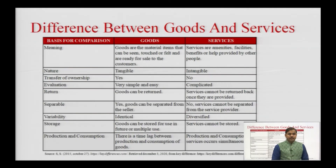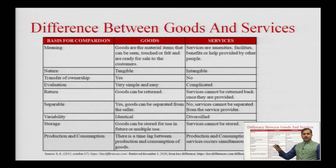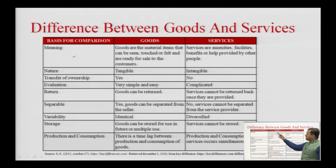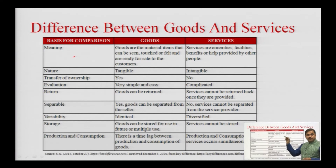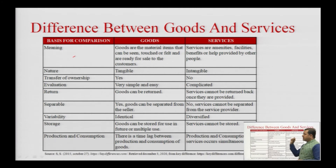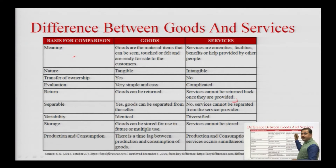Now let us discuss the difference between a product and services. On the basis of meaning, goods are material items that can be seen, touched, or felt and are ready for sale to customers. Services are amenities, facilities, benefits, or help provided by other people — for example, this lecture series: you can listen and enjoy the services of the initiative taken by the university, but you definitely cannot touch this lecture series.